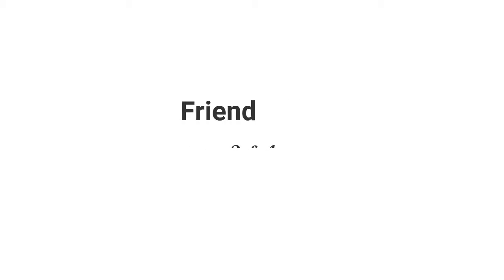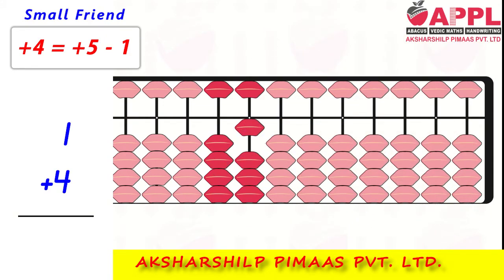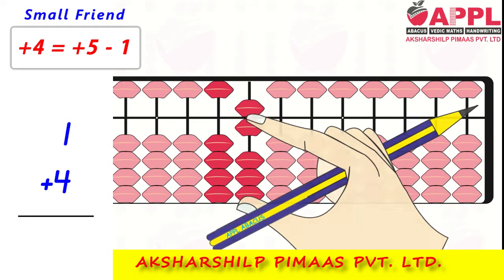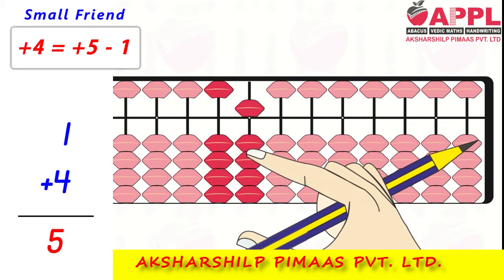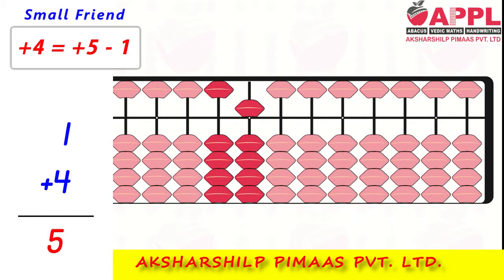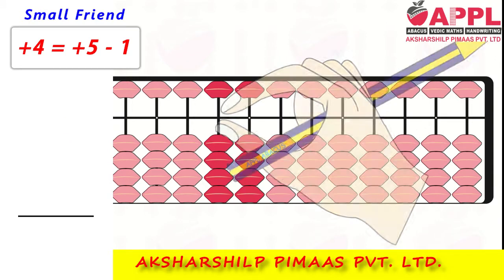Small friends 3 and 4. First, bring 1 on the abacus, then add 5 less 1, as 1 is the friend of 4. That gives us 1 plus 4.